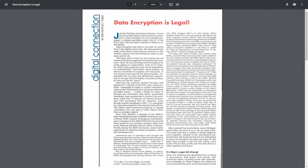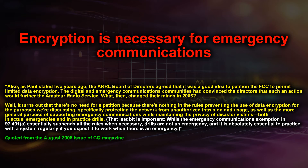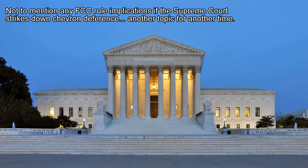The August 2006 issue of CQ Magazine had a big write-up on encryption — you can Google that yourself. Notably, the ARRL board of directors agreed years ago that it would be a good idea to petition the FCC to permit data encryption. It turned out there was no need for petition because when it comes to network access or access control, it's not prohibited — it's only the obscuring of the meaning of a message that matters. That's where it gets into a gray, fuzzy area trying to figure out if you're access-controlling or obscuring the meaning, especially with data.